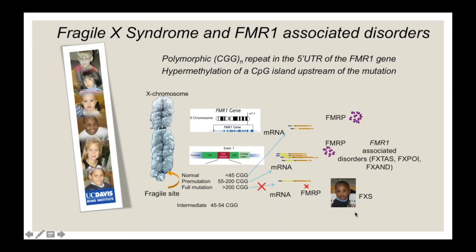There are also mosaic individuals who have some alleles that are methylated and some that are unmethylated. The percentage of cells carrying the unmethylated allele determines how much protein can be produced, so these individuals generally present with a less severe phenotype.